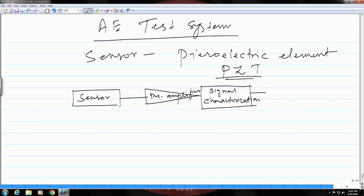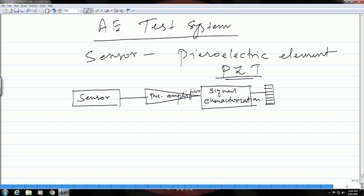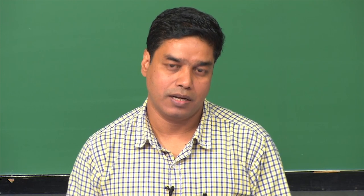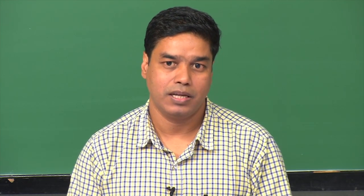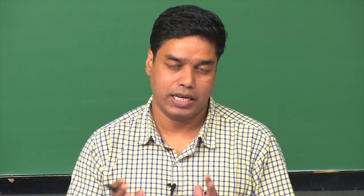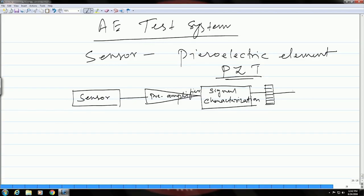Then finally, you send it to the display system either through a single channel or you can also send it to multiple channels depending on what kind of sources you have and how many acoustic emission events are being picked up by the sensor. For a particular defect or for a particular acoustic emission event, you can collect a number of signals and send them through multiple channels to the display system, which will finally display the signal and give you an indication about the defects and damage inside the component.